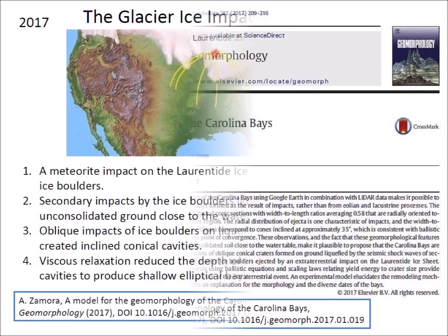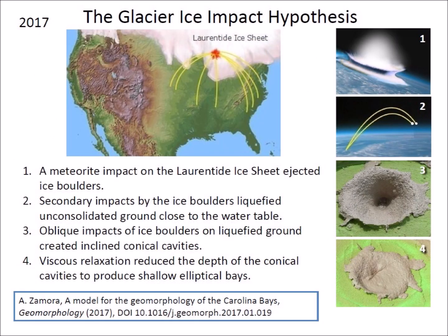The paper introduced the Glacier Ice Impact Hypothesis, which proposed that an extraterrestrial impact on the Laurentide Ice Sheet ejected glacier ice boulders in ballistic trajectories, and that their oblique secondary impacts liquefied the ground and created inclined conical cavities that became shallow elliptical bays by viscous relaxation.